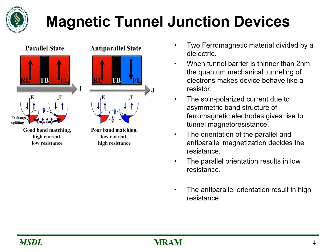Now let's take a look at magnetic tunnel junction devices. Consider two ferromagnetic materials divided by a dielectric. When the tunnel barrier between the two materials is lower than 2nm, a phenomenon known as quantum mechanical tunneling of electrons will take place, making the whole device behave like a resistor. This is due to the spin-polarized current which flows due to the asymmetric band structure of the two ferromagnetic materials, resulting in the rise of tunnel magnetoresistance.